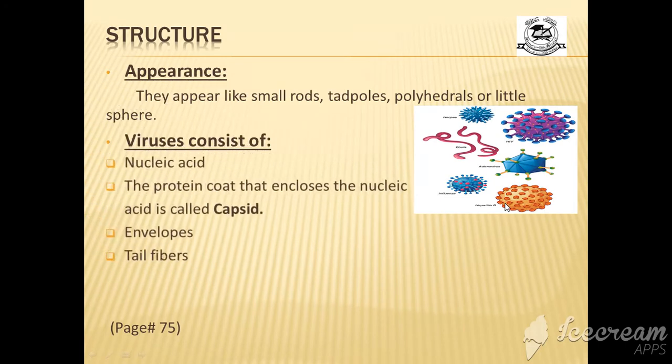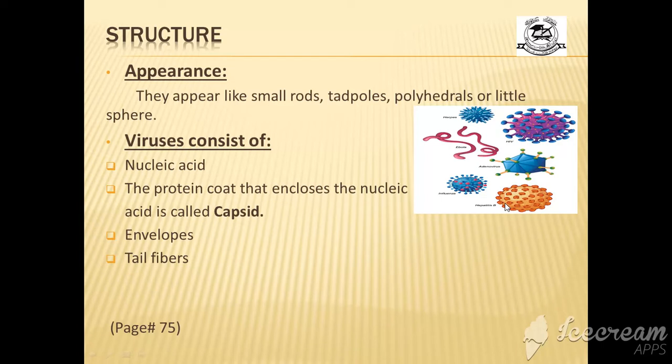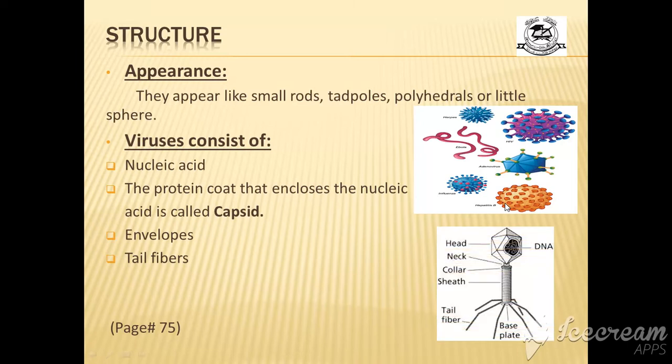Viruses consist of nucleic acid, capsid, envelopes, and tail fibers. The protein coat that encloses the nucleic acid is called the capsid. You can see in the picture inside here the DNA. DNA means nucleic acid—deoxyribonucleic acid. Nucleic acid may be RNA (ribonucleic acid) or DNA (deoxyribonucleic acid). The protein coat which encloses this DNA is called the capsid.